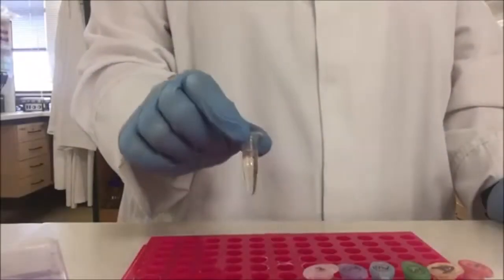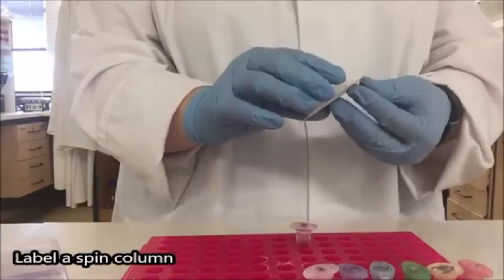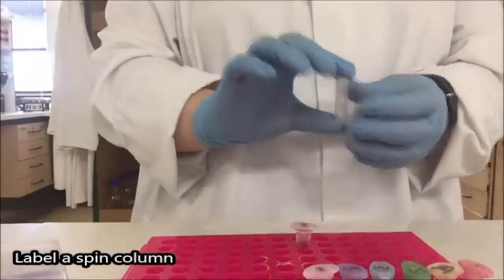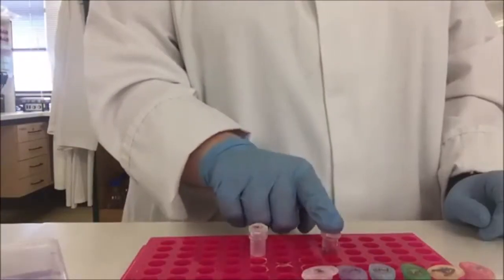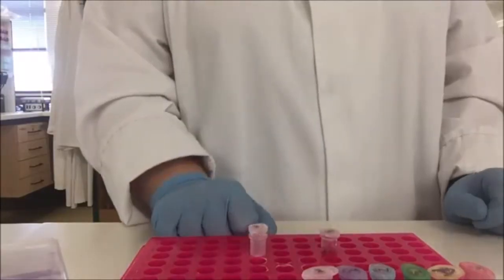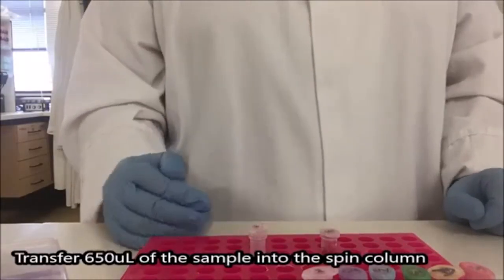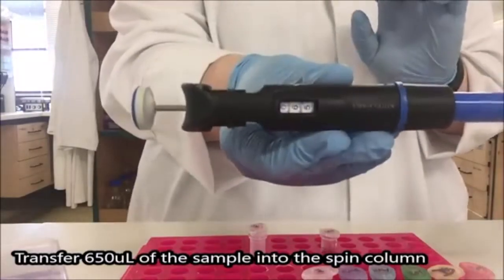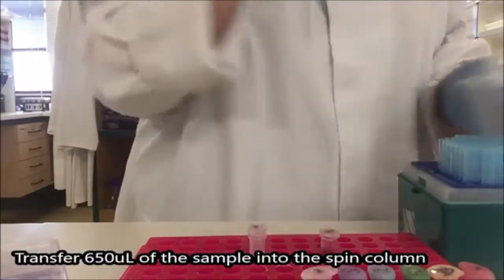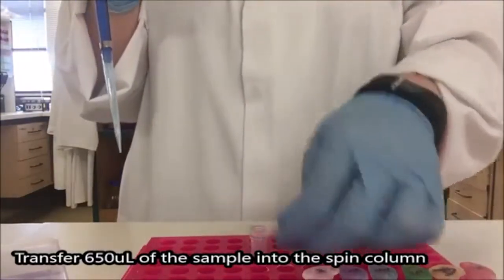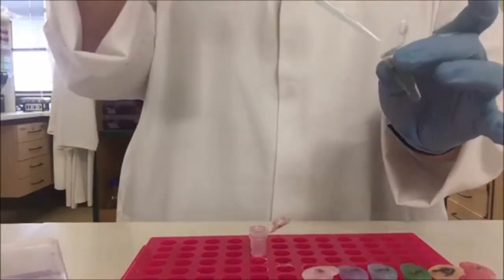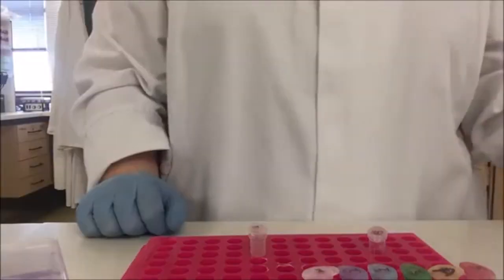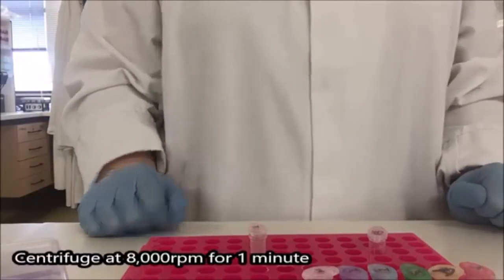I'm now going to transfer this mixture into a spin column. You'll notice that while the shredder column that we used earlier was purple, this spin column is white. The full volume of our sample will not fit into the top of our spin column. So I'm going to do this step twice in 650 mcl lots. Using the blue pipette set to 065, I'm going to transfer in what will turn out to be approximately half of our sample to the top of our spin column. And I'm going to centrifuge this for one minute at 8000.